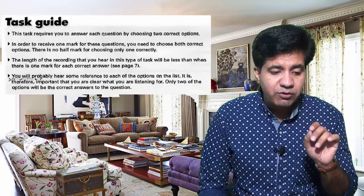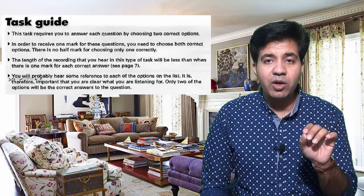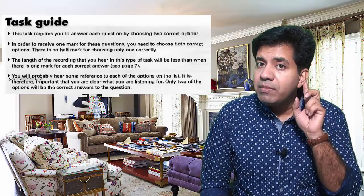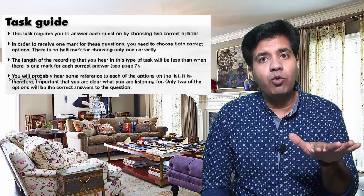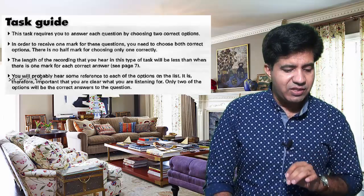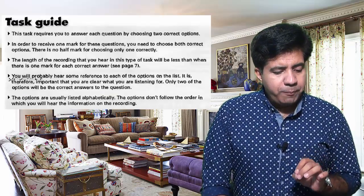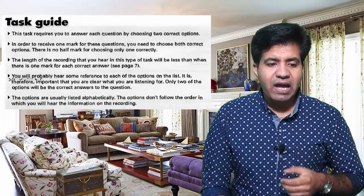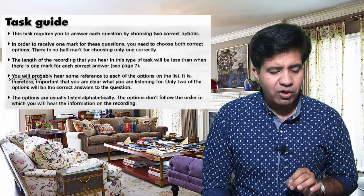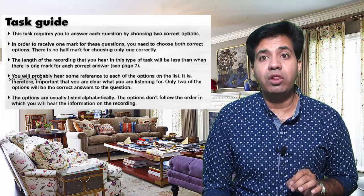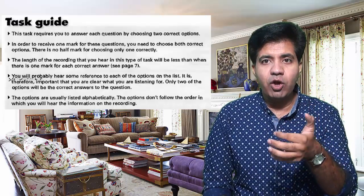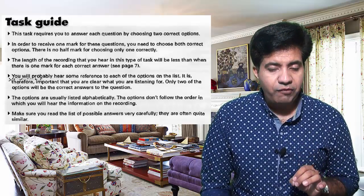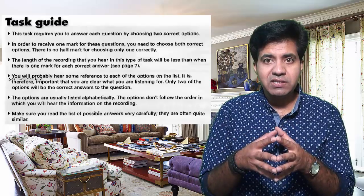It is therefore important that you are clear about what you are listening for. For example, if you are listening for which two facilities are closed in winter, you're listening for that — not for facilities that remain open throughout winter. The options are usually listed alphabetically like A, B, C, D, E. The options don't follow the order in which you will hear the information. Make sure you read the list of possible answers very carefully — they are often quite similar.